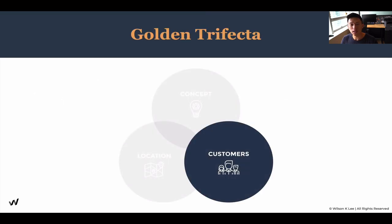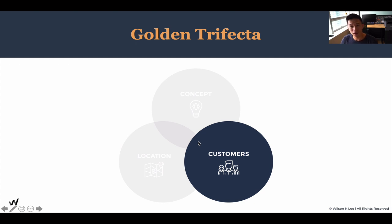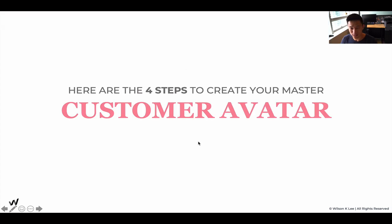At the beginning of our module, we talked about the golden trifecta — the three different components. We're trying to find that overlapping spot that would ensure our restaurant becomes profitable. Today we're on the final stages in crafting our customer avatar. If you haven't already, go back to the first lesson to check out what the golden trifecta is — it is something that will change the course of your restaurant.